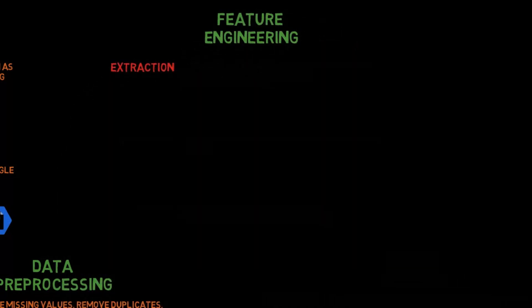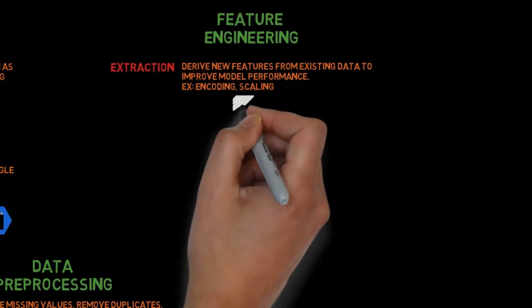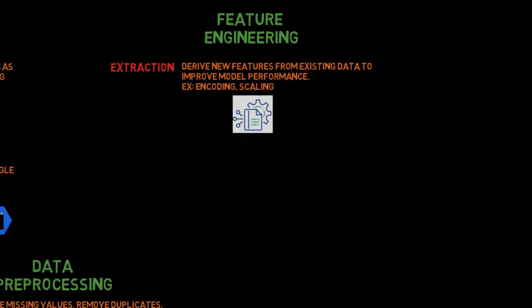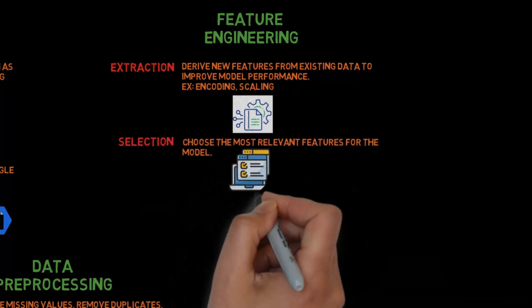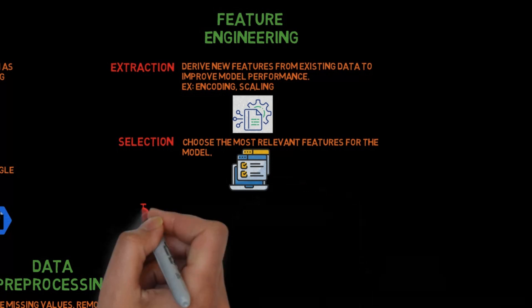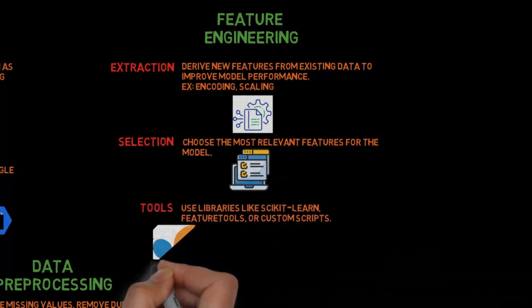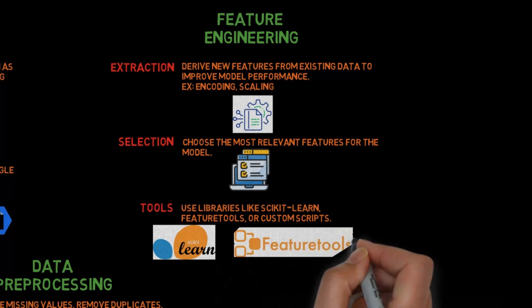Step 3: Feature engineering. Extraction: Derive new features from existing data to improve model performance — for example, encoding and scaling. Selection: Choose the most relevant features for the model. Tools: Use libraries like Scikit-Learn, feature tools, or custom scripts.